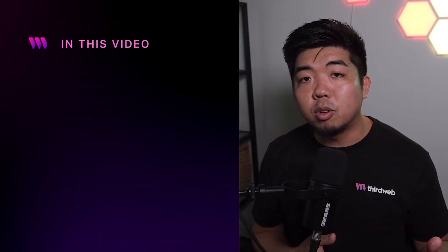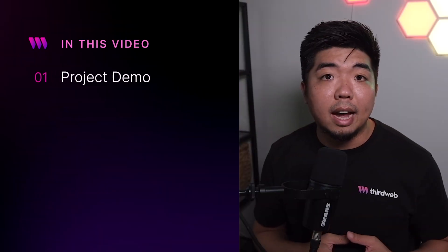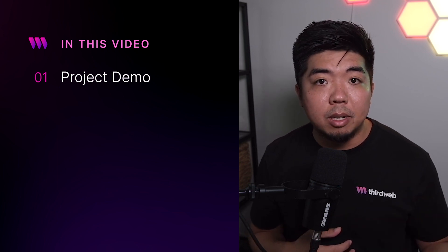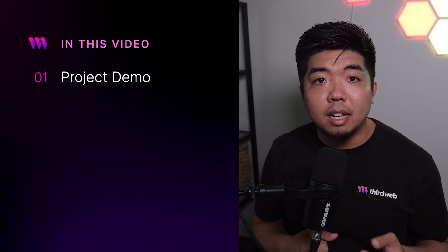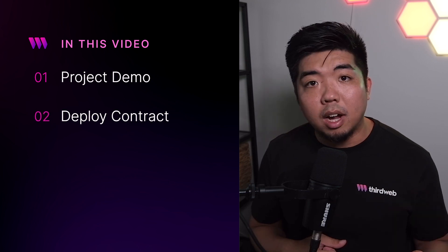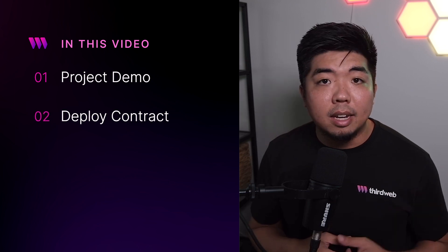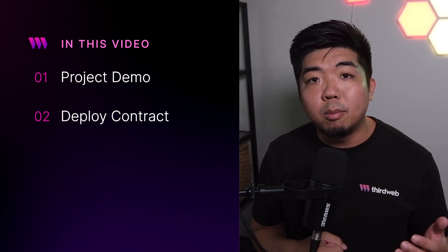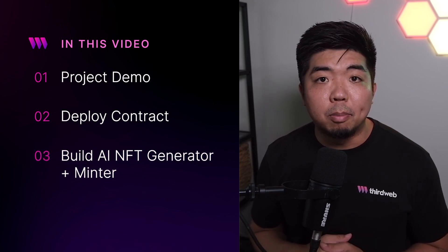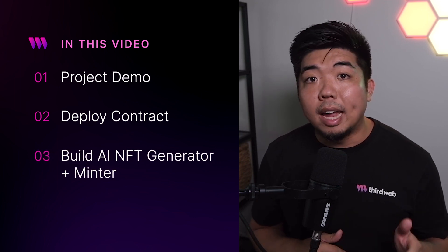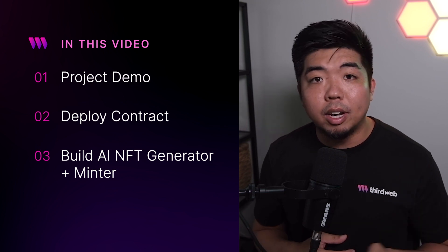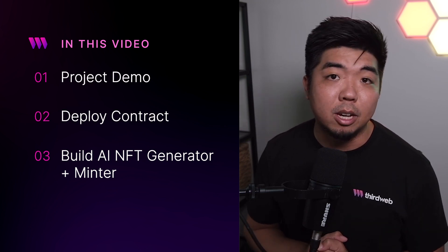An overview of what we're going to be covering in this video: we'll first go over a demo of the AI NFT generator, generate some images, mint them as NFTs. We'll then deploy our necessary contracts and set up everything we need for building out this application. Then we'll jump into our code editor to build out our AI NFT generator. With all of that being said, let's jump on our computer and take a look at a demo.